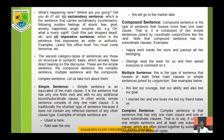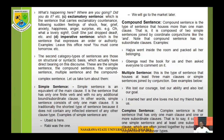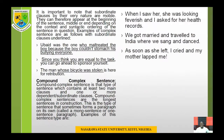A multiple sentence is a type of sentence that contains at least three main clauses or simple sentences joined by conjunctions. Unlike compound (which has two), multiple sentence has at least three independent clauses that can stand on their own when separated. Example: 'We lost our courage, lost our ability, and also lost our goal' — each part is a main clause. 'Well, I married her and she loves me but my friend hates us' — three main clauses joined together, making a multiple sentence.